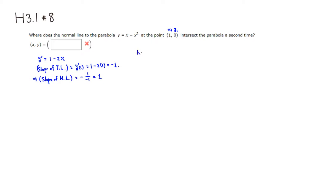So if we want the normal line, using point-slope form: y minus y₁ (which is 0) equals the slope 1 times (x minus x₁, which is 1). So we get y equals x minus 1.